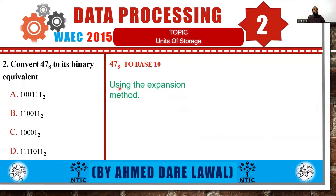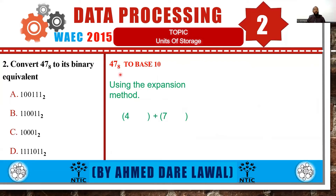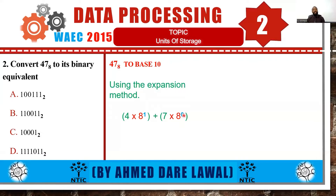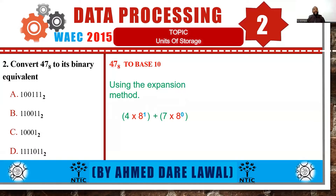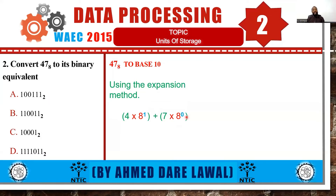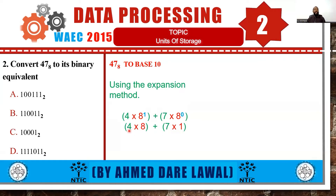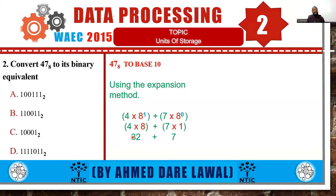Using the expansion method, we're going to use the place value — which is 4 and 7 — and multiply the base value with the place value. The place value starts from 0 to 1, and since we only have two values, we use 0 and 1. Any term to the power of 0 gives us 1, and any term to the power of 1 gives the same value. So we multiply 7 times 1 and 4 times 8, giving us 32 plus 7, and finally we have 39 base 10.